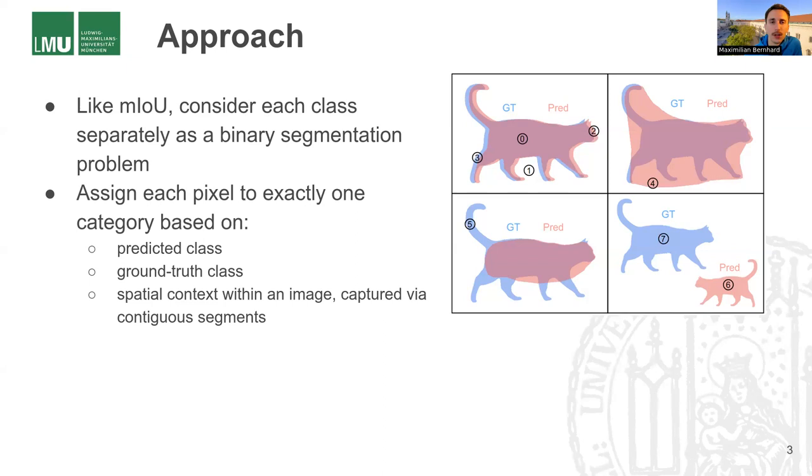We consider each class in the dataset separately, so we have a binary ground truth mask and a binary prediction mask. And then we want to assign each pixel in every image to exactly one category based on the predicted class, the ground truth class, and in addition to that, the spatial context within an image.